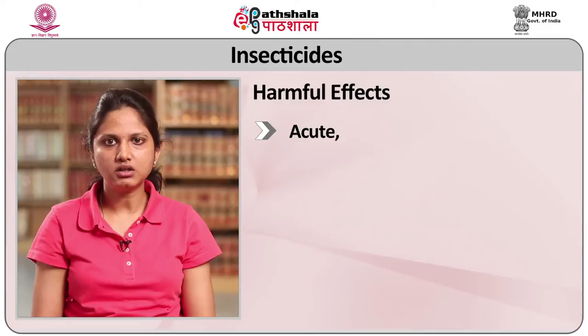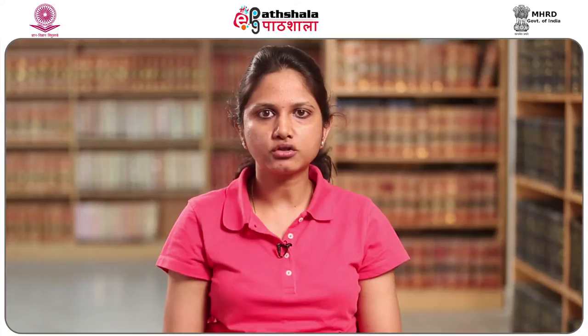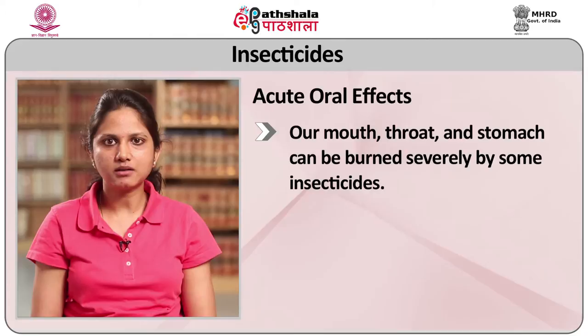Acute effects are illness or injuries that may appear immediately after exposure to insecticide, usually within 24 hours. Studying insecticides' relative ability to cause acute effects has been the main way to assess and compare how toxic insecticides are. Acute effects can be measured more accurately than delayed effects and are more easily diagnosed. Acute effects usually are obvious and often reversible if appropriate medical care is given promptly. Insecticides cause four types of acute effects: oral, inhalation, skin and eyes. In acute oral effects, the mouth, throat and stomach can be burned severely by some insecticides. Other insecticides that you swallow will not burn your digestive system but will be absorbed and carried in your blood throughout your body and may cause harm in various ways.